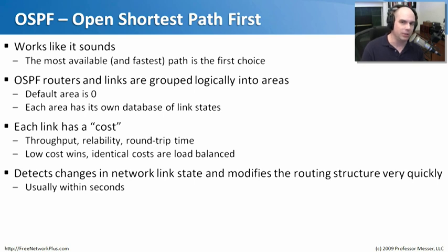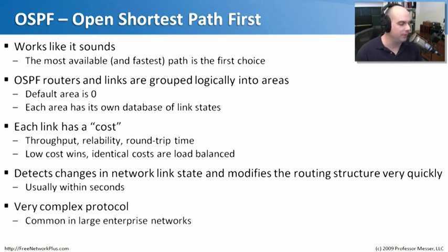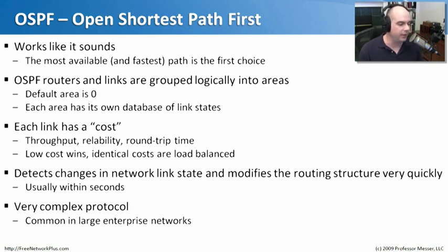OSPF is really good at determining when something changes. Changes in network link state are important in a routing protocol because you want your network to recover quickly. OSPF does recover very quickly, usually within seconds — it determines that a link is down and starts routing traffic through a completely different connection. However, OSPF is a very complex protocol, not really used in smaller networks. It's for very specific purposes, and if you're using OSPF, you're most likely on a very large enterprise-type network.